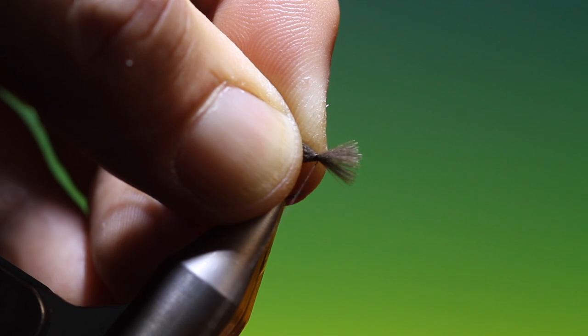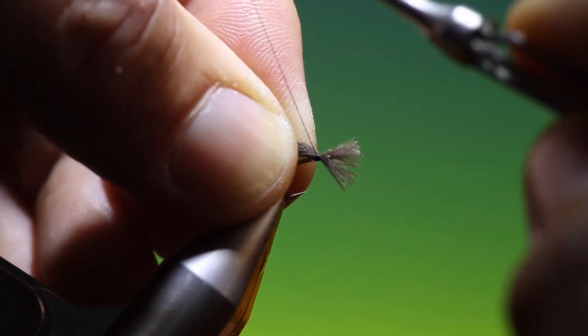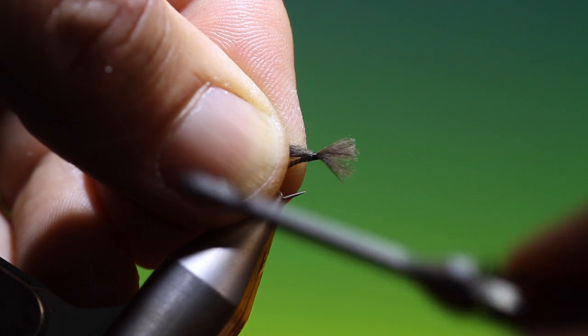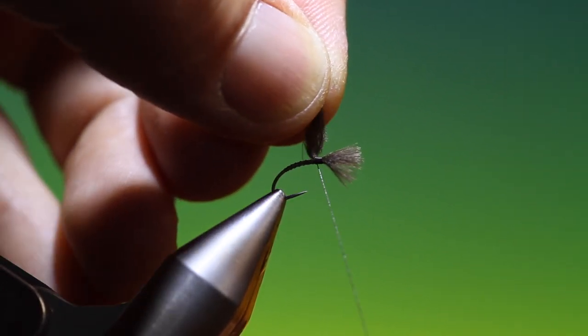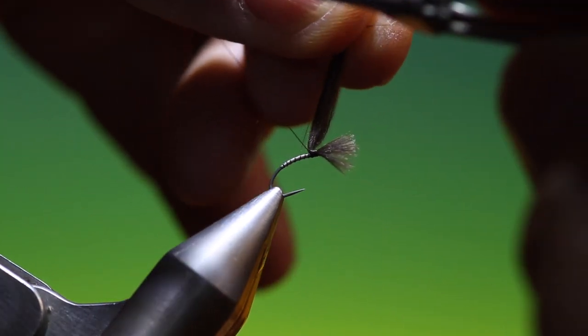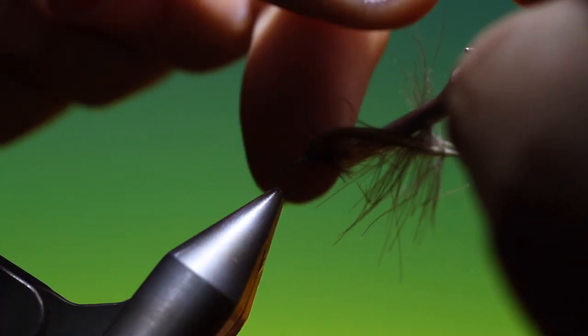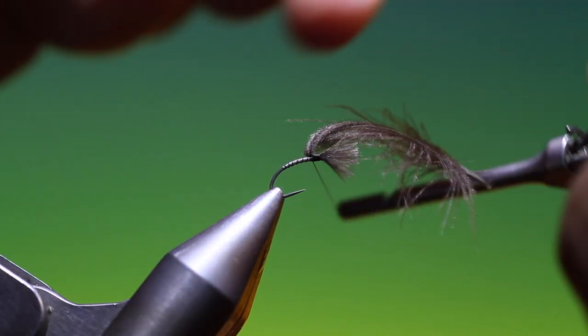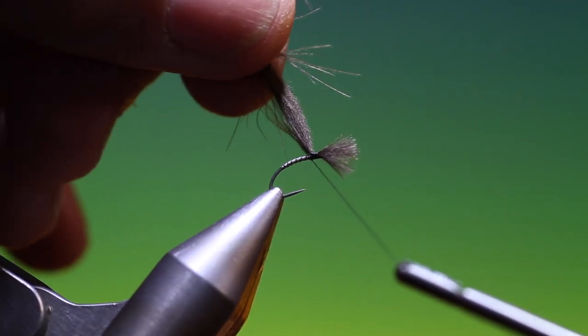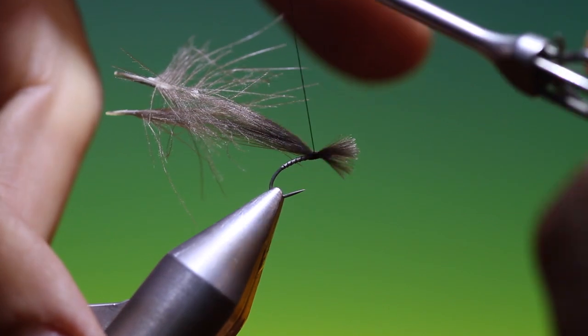And we'll pinch that CDC in. And we go back three or four turns just like that. Then we lift this CDC at the rear and we make two turns under like that to lift it at the back. Then we can go forward again.